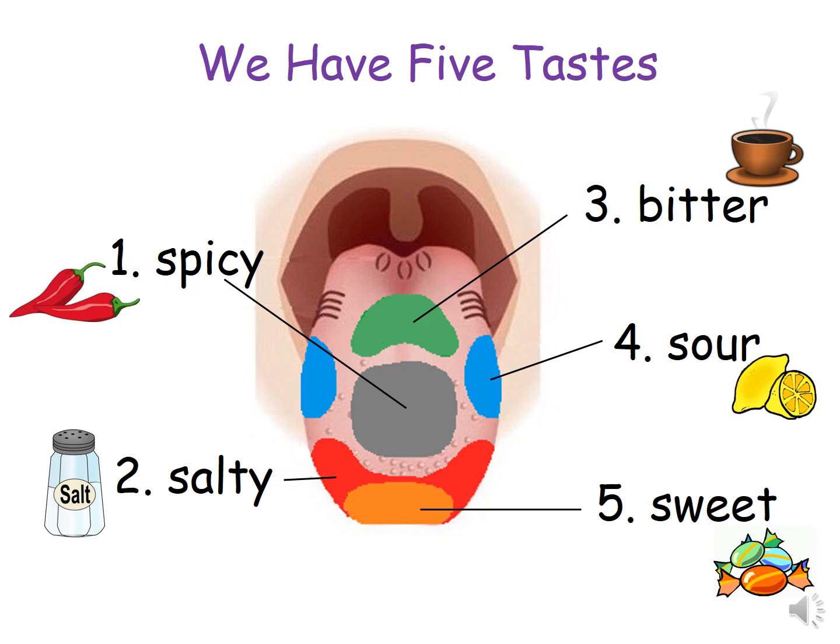Different parts of your tongue taste different tastes. 1. Spicy. The grey area on your tongue is where you taste spicy food like chilies.